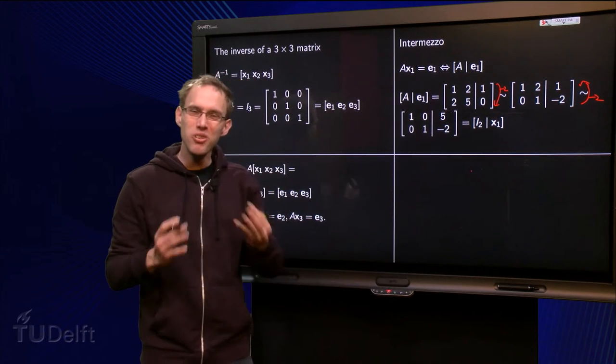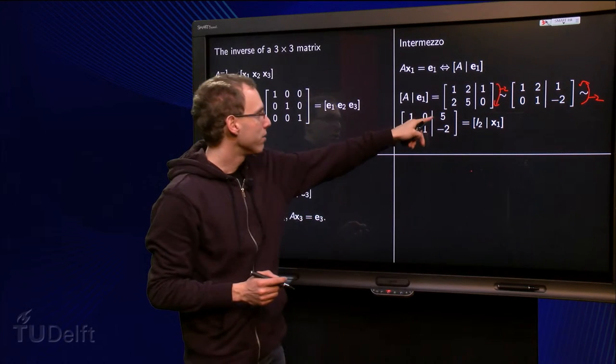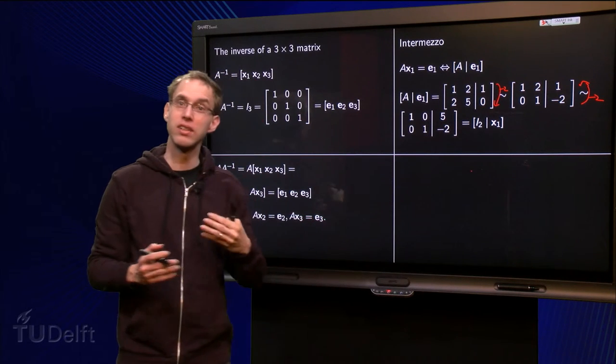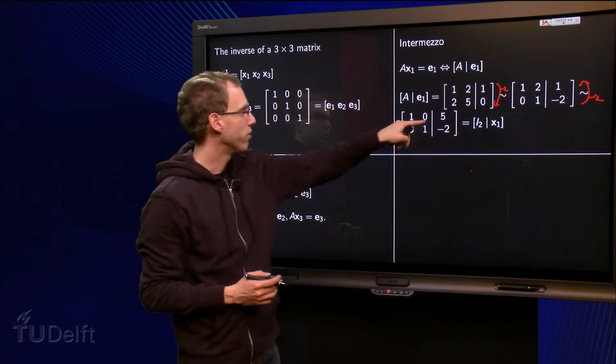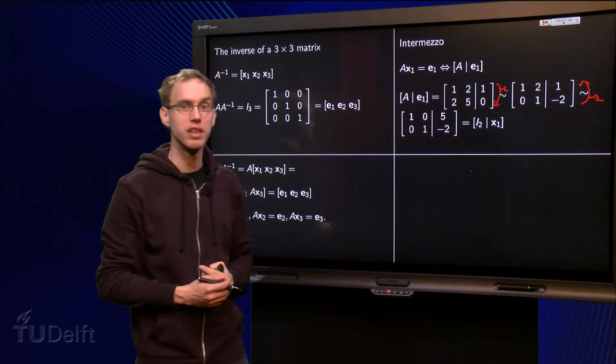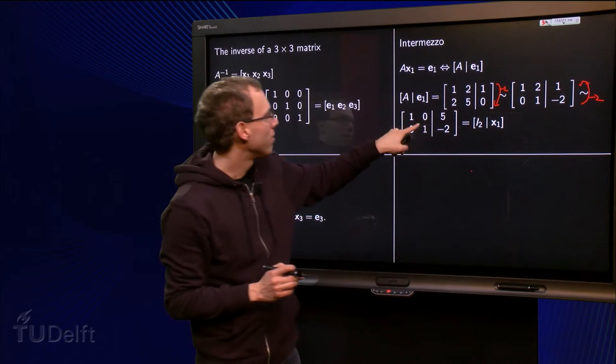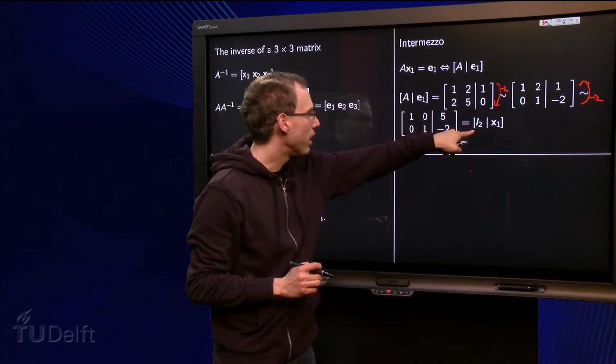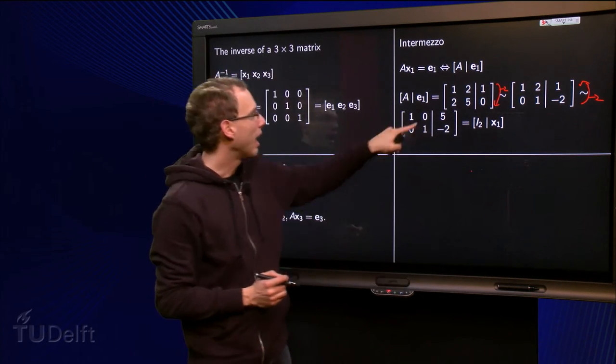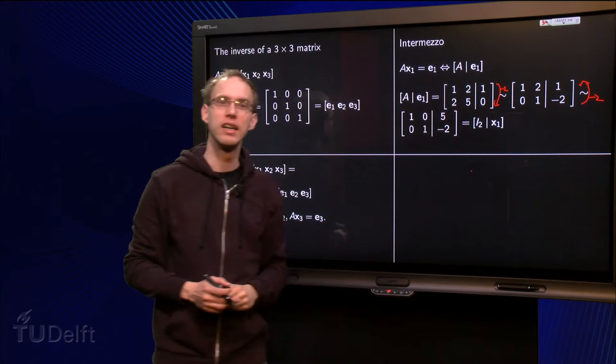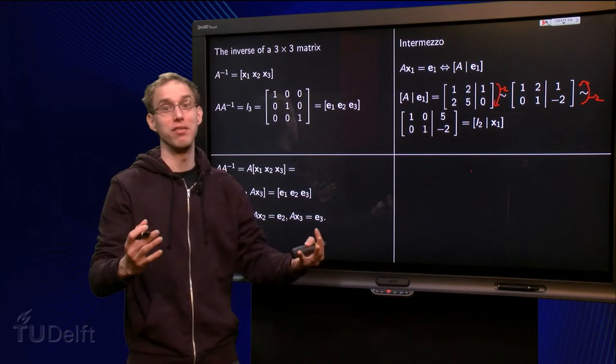So then we have our solution of the problem, first component 5 and the second minus 2. So the first component of x1 equals 5 and the second component equals minus 2. But what is essential is that you see that we have got the I2 matrix over here, and our solution over here. So what have we done in fact?